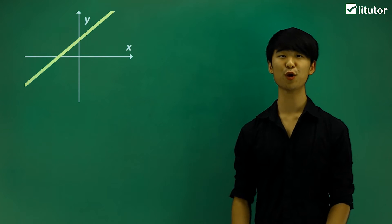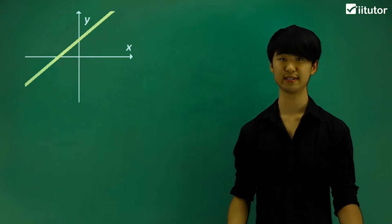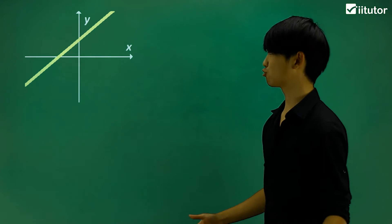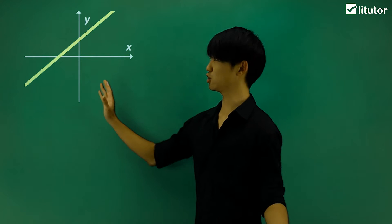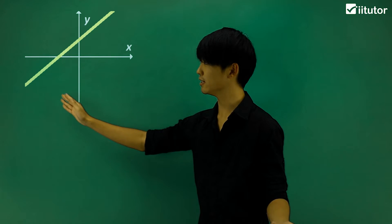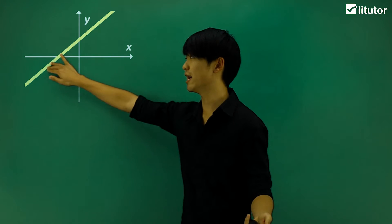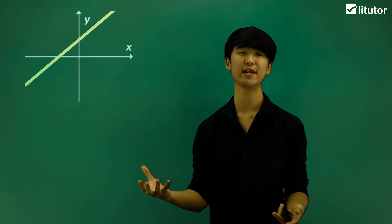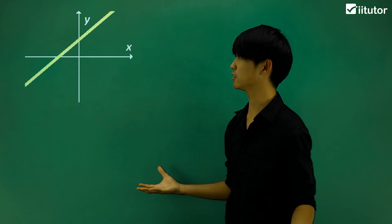We're going to be learning about gradients. Gradients describe the slope of a line. So with any given line like this, the line should have a slope, and that's what the gradient will give us.